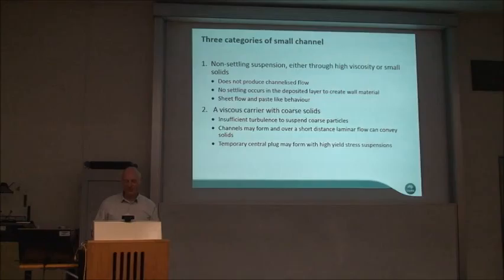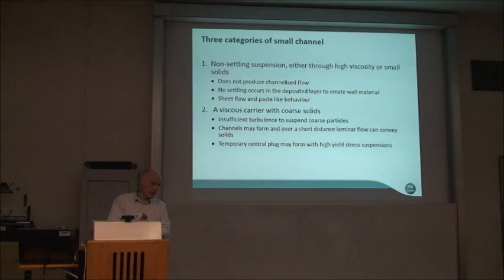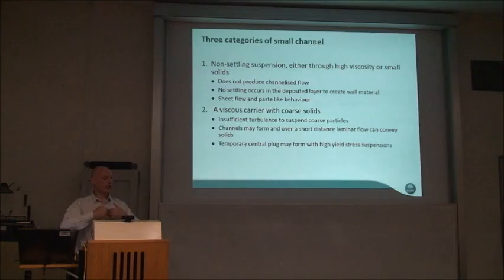The three types of small channel are: first, a non-settling suspension represented by our R1 material — very viscous or very small particles, almost paste-like. You won't get channelized flow because there's no settling — you can't form a more concentrated bed. You may get sheets of waves constantly pouring over each other and building up. This is seen in some alumina tailings.